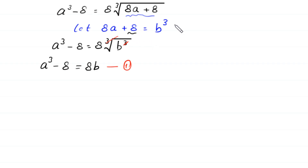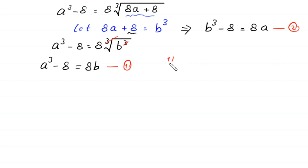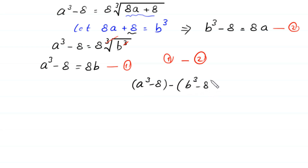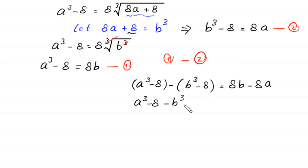From equation 1, if we rearrange, we get b³ minus 8 equals 8a. Combining these two equations and subtracting, we get a³ minus b³ minus 8b plus 8a, rearranged as a³ minus b³ plus 8a minus 8b equals 0.